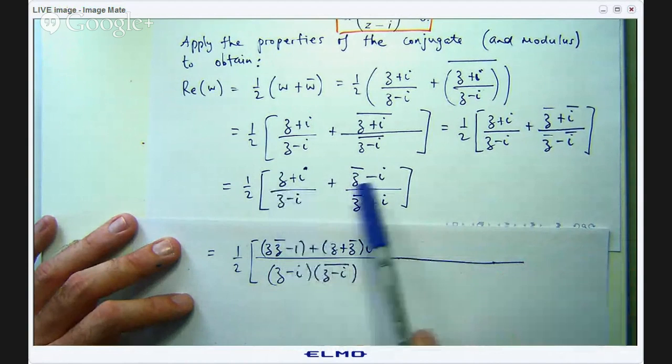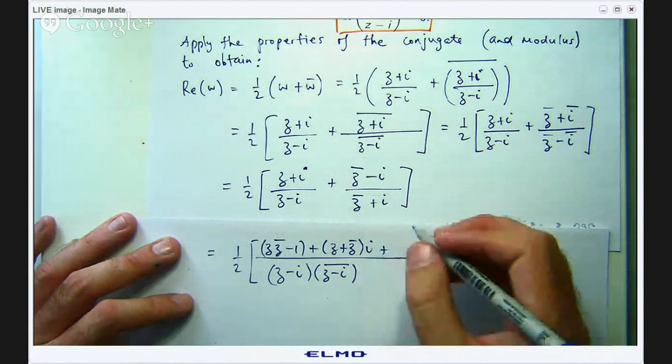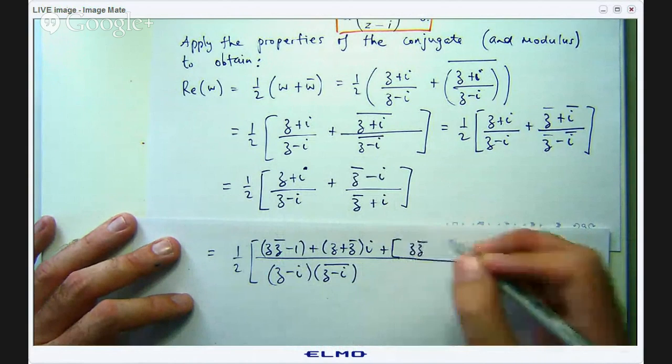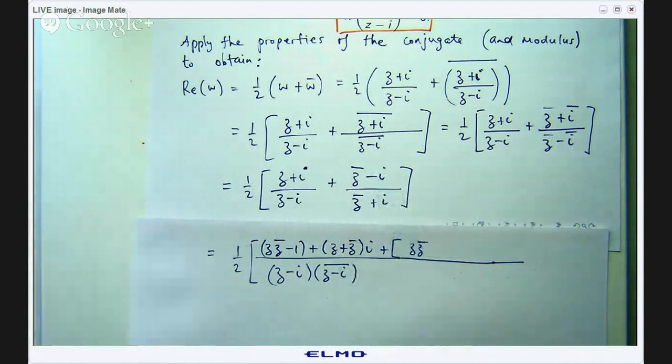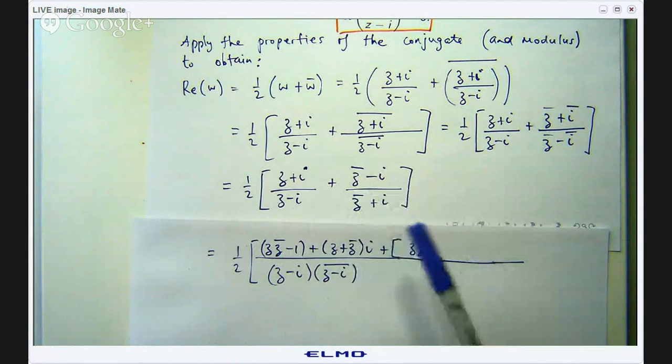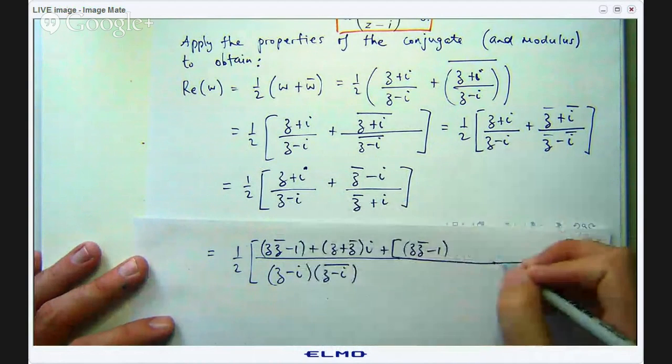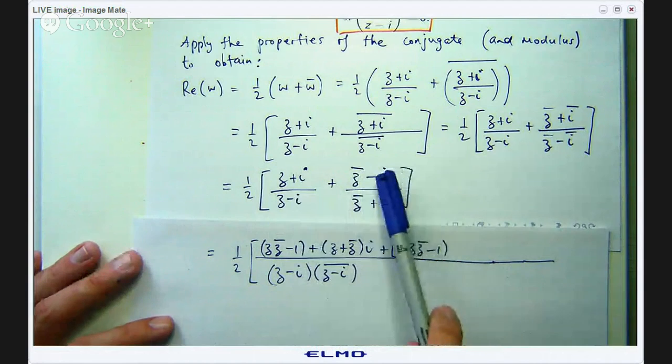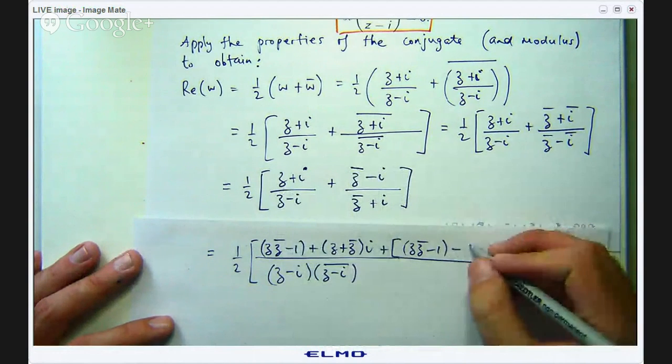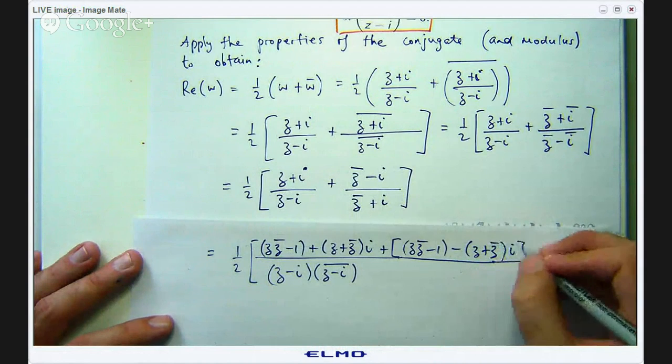So let us do the same with this times this now. Okay so z times z bar again that is going to be real, and negative i times negative i, okay so i squared is negative 1 well that is just again going to be negative 1 there because the two minus signs will cancel. And negative i times z bar, negative i times z, if I factor out the i there I will get this, sorry the negative i I will get this.